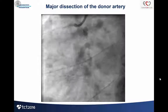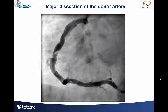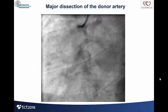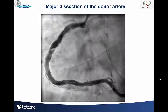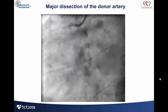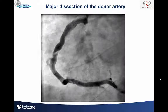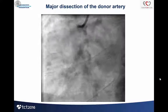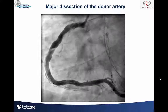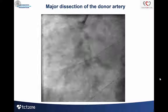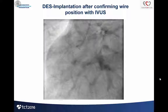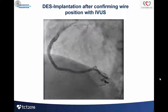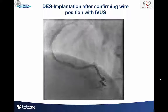Then I did the next angio and saw a huge spiral dissection. The problem was that we also had septal collaterals to the LAD, so the patient was not doing well. The first thing I did was knuckle down the guidewire and hoped I was in. I confirmed with IVUS and was lucky to be in the true lumen, so I had to stent the whole vessel.